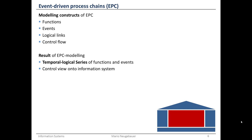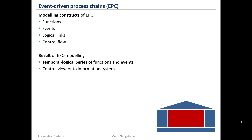Once you have the EPC diagram — this EPC model — you have a core part of your RS house: the control view, which is essential for your information system and the business process it supports. The control view is one essential part of the RS house model, positioned at its center as discussed before.